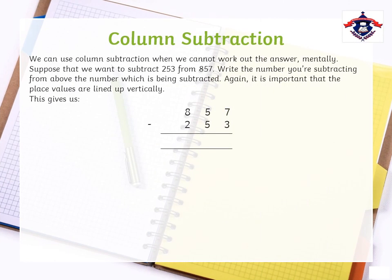What is column subtraction? When we cannot work out any two numbers mentally, we can subtract those numbers with the help of column subtraction. For example, we want to subtract 253 from 857. We will write the numbers as per their place values.